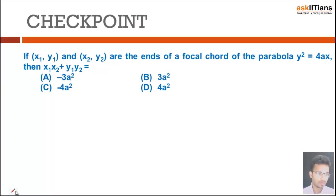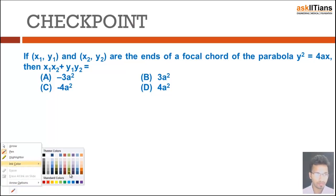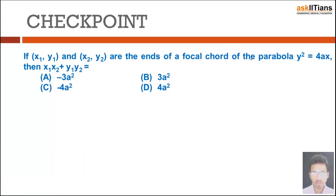Let's look at the questions. If (x₁, y₁) and (x₂, y₂) are the ends of a focal chord of the parabola y² = 4ax, then we have to find the value of x₁x₂ + y₁y₂. Immediately the thing that should come to our mind is that since it is a focal chord, the ends will be in the form of t and -1/t.